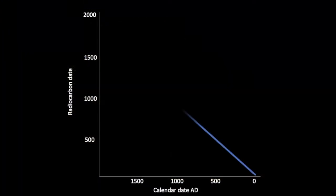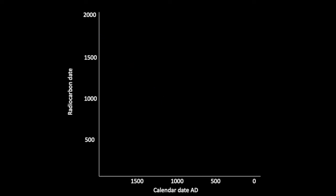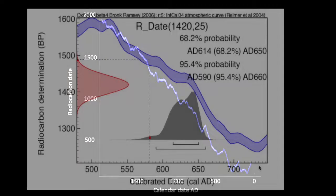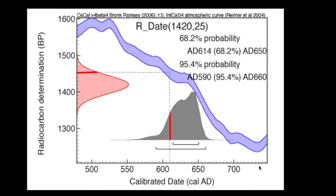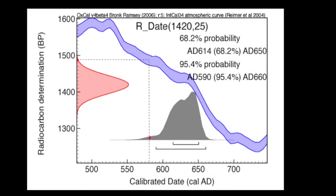The concentration of radiocarbon in the atmosphere has not been constant historically. Instead, it fluctuates over time. Calibration is therefore needed to correct radiocarbon dates into calendar years.